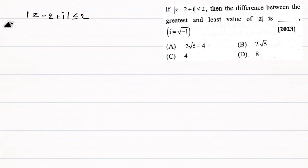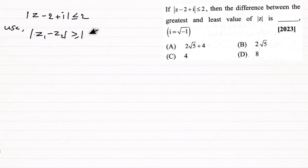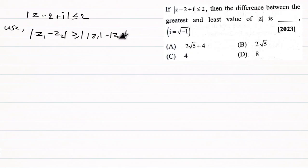We use the property of modulus: modulus of (z1 minus z2) is greater than or equal to the modulus of (modulus of z1 minus modulus of z2). Here z1 and z2 are two complex numbers. The modulus is a scalar quantity, and the right side is the difference between two scalar quantities.